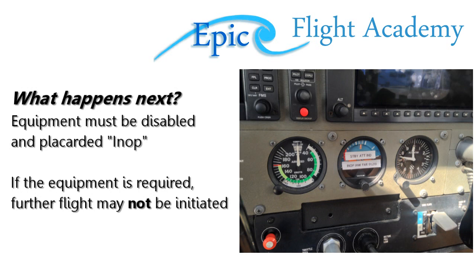What happens next? If the equipment is not required, FAR 91.213D requires that it is disabled and placarded inoperative — an example is shown in the picture. If the equipment is required for flight, however, we cannot fly. Further flight may not be initiated with required equipment inoperative.